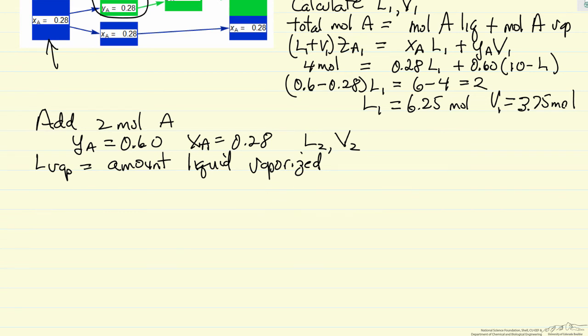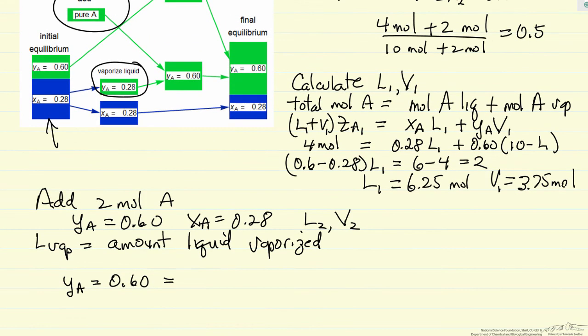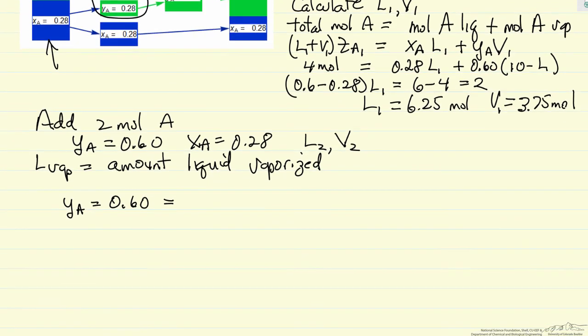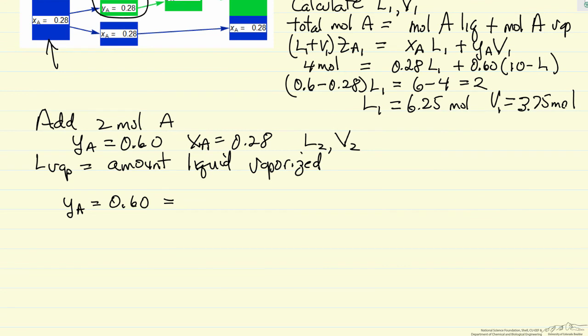The idea is that our final mole fraction has not changed in the vapor phase. All we have to do is say, here's the amount vaporized. We're going to mix it with A such that the mole fraction has to be 0.6. So let's do that calculation.